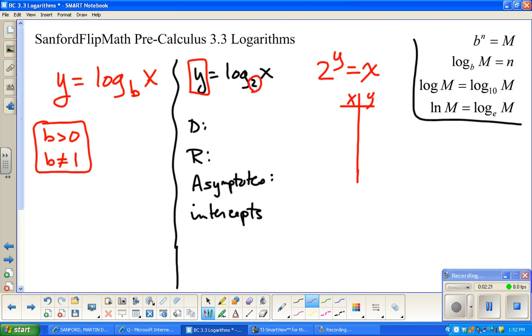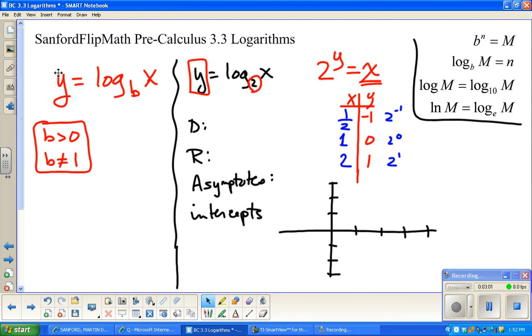Since this is solved for x, I'm going to put in y values: negative 1, 0, 1. I'm putting in y values because it's easier to make those calculations. 2 to the negative 1 is 1 half, 2 to the 0 is 1, and 2 to the 1 is 2. I'm going to make a little graph over here. 1 half and negative 1, 1 and 0, and 2 and 1.